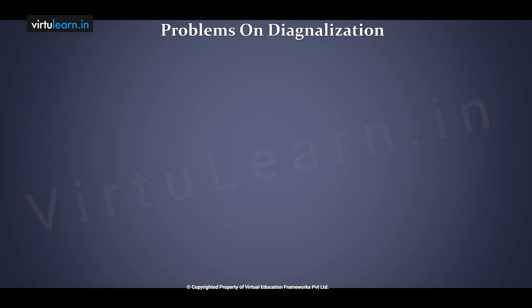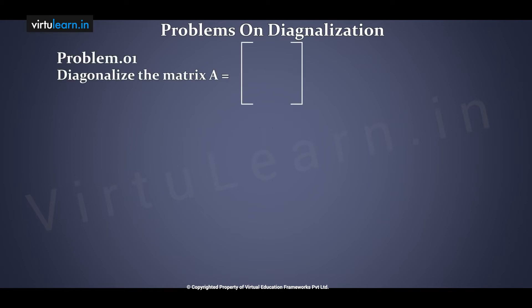Problems on diagonalization. First problem: diagonalize the matrix A equals 1 1 1 / 0 2 1 / minus 4 4 3, and also calculate A power 8 and A power 4 by using diagonalization.